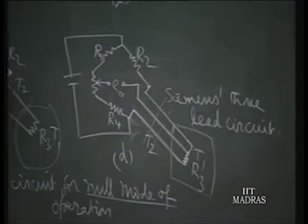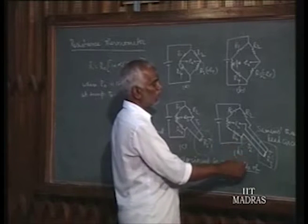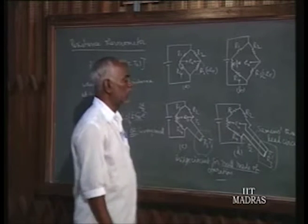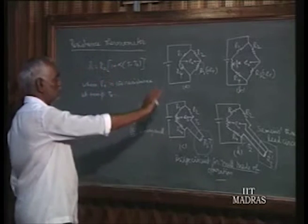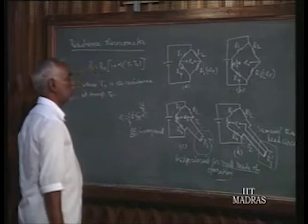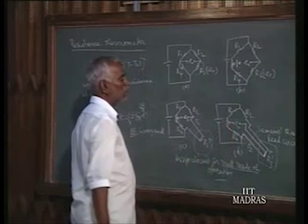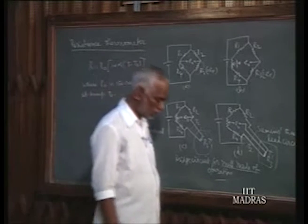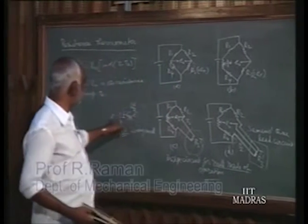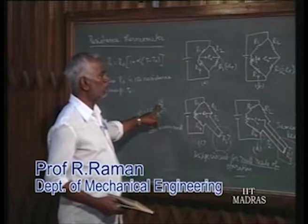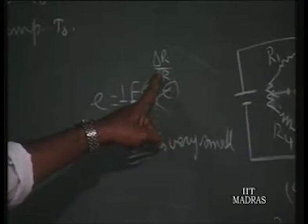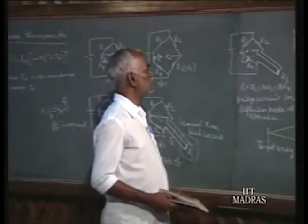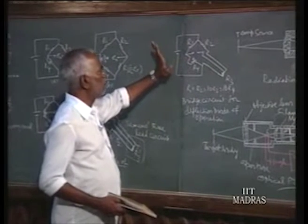The error introduced in circuit C is nullified by having three lead wires — the common junction is brought to the same chamber. So that is how the engineer's design was done, and nowadays circuit D is adopted as the final circuit for the null mode of operation. If you want to use the resistance thermometer in deflection mode of operation, the non-linearity becomes an issue since delta-R is very large, it is no more linear. But if you want to use it in deflection mode, the non-linearity should be reduced.